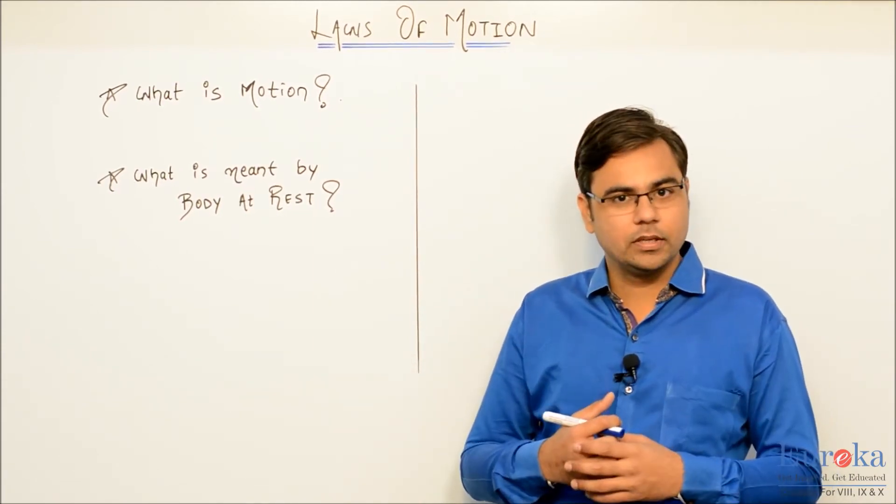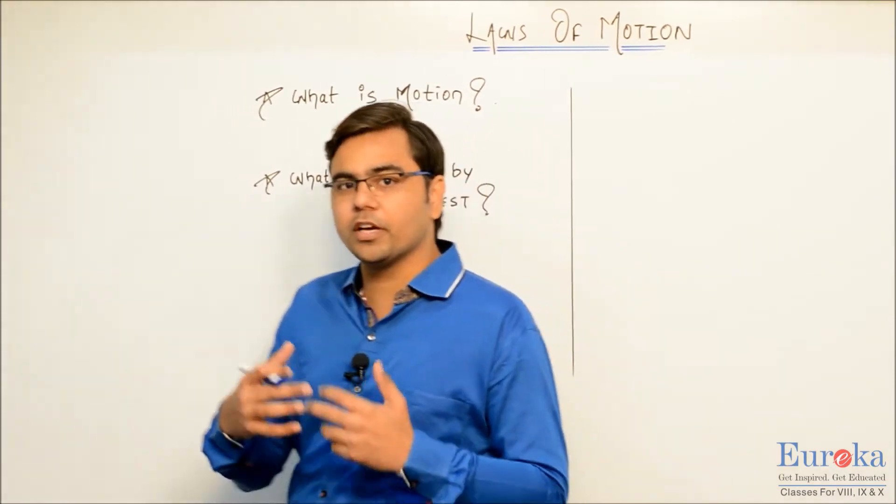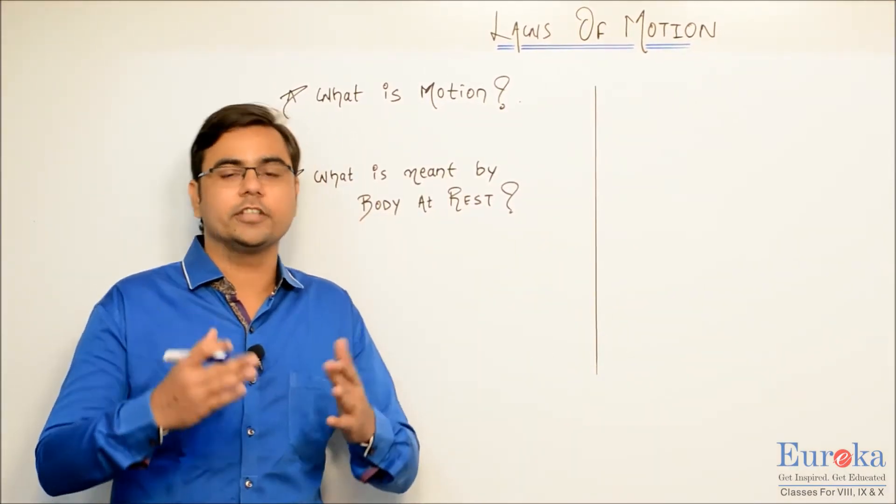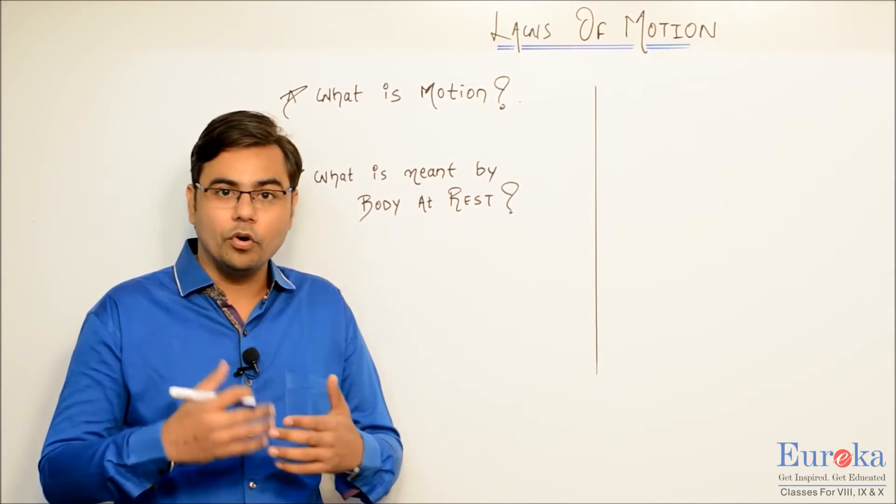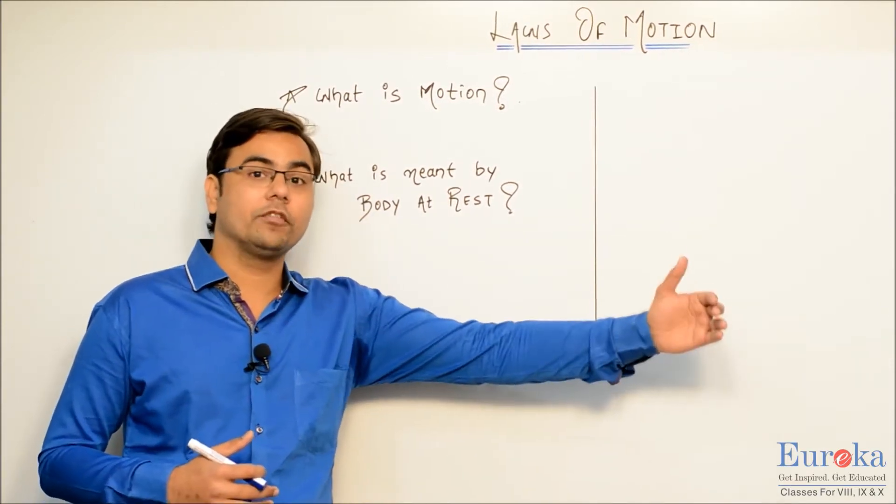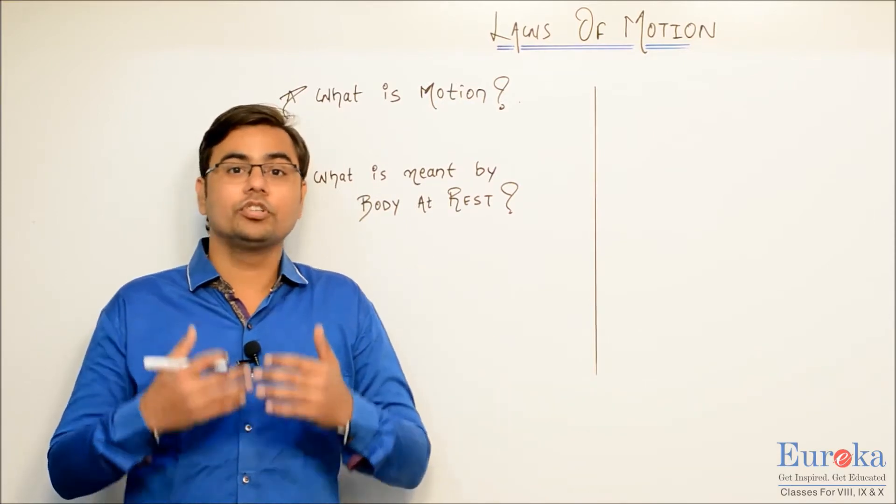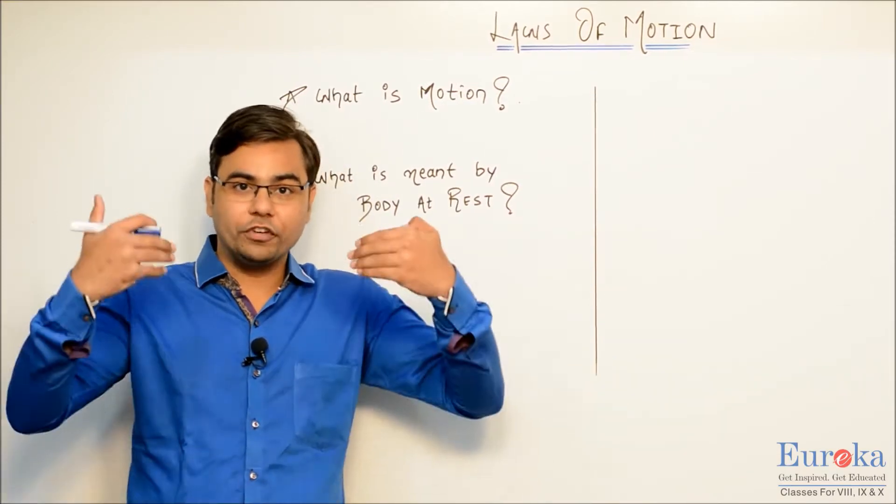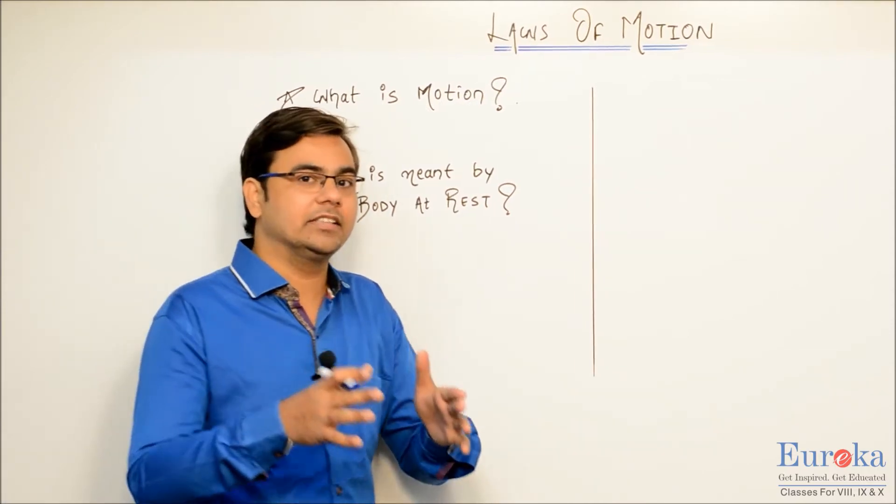Consider myself for example. If I change my position from here to here, then this change in position is what we can call as motion. A little while ago I was standing there, so that was my initial position, and now I am standing here, so this is my final position. So the change in the position of an object is what we can consider as motion.